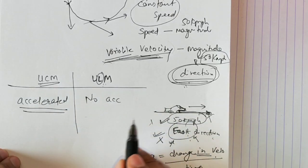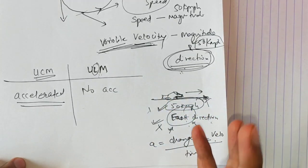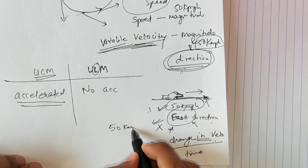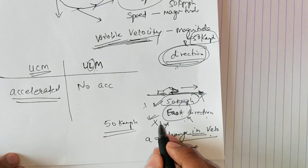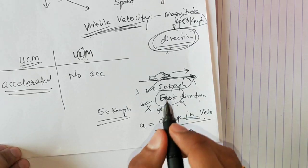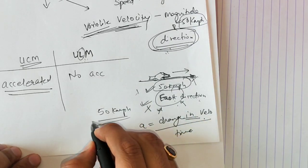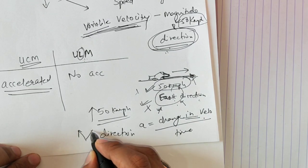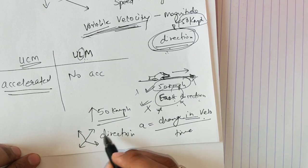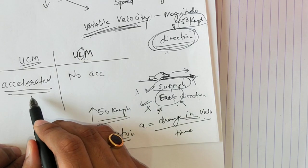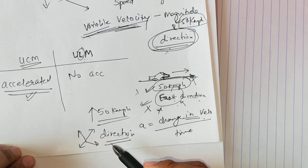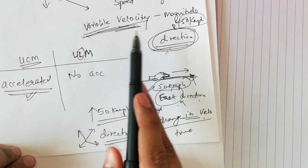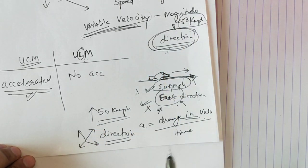The acceleration is not zero. Some of you might be confused: there is no change in speed — it is 50 km/h constantly — so how is the vehicle accelerated? Acceleration does not only mean speed is increasing. Even if the direction is changing, the object is said to be accelerated, because acceleration depends on variable velocity. Variable velocity means speed is constant but direction is continuously changing.